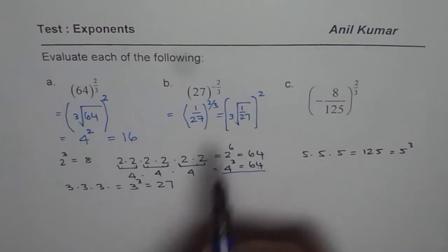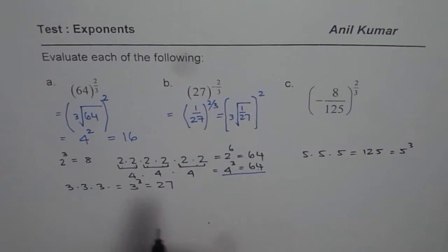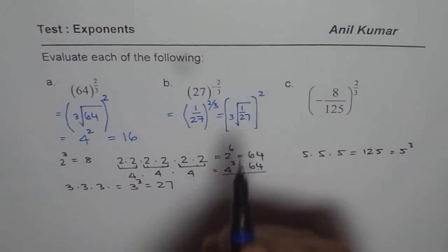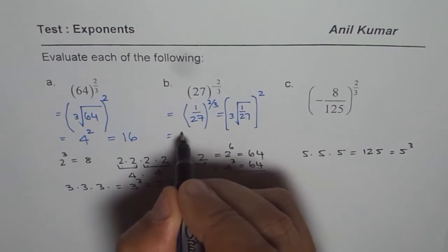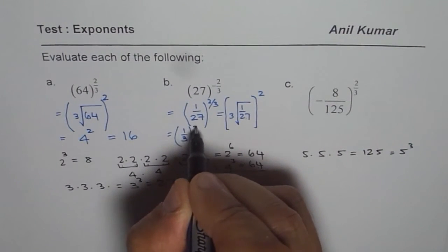Now, what is cube root of 27? 3 cubed is 27. So cube root of 27 is 3. We could write this as 1 over 3. Cube root, and then square it.